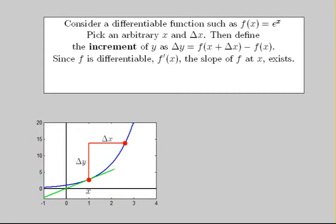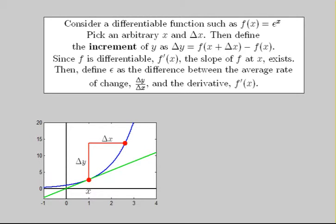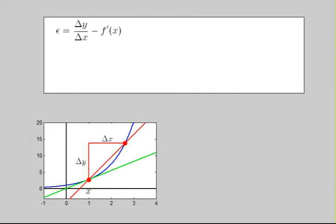Because f is differentiable, its derivative at x exists, and is given by the slope of the green tangent line shown here. We now define a function epsilon as the difference between the average rate of change and the derivative. That is, epsilon is the difference between the slope of the red secant line and the slope of the green tangent line.